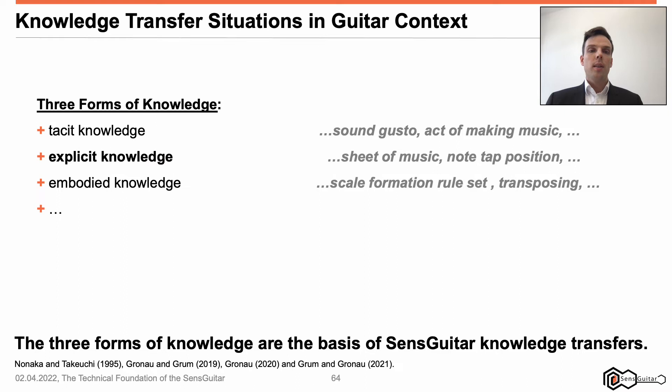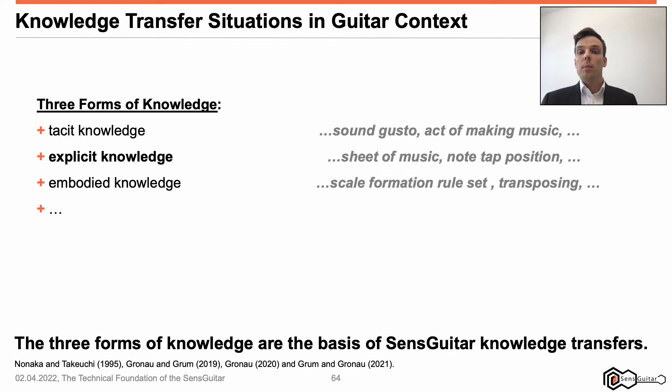Second, explicit knowledge. This form of knowledge is characterized by its easy handling, because it's unbound to an individual's head. For instance, knowledge of a musician about a song has been documented. Imagine a sheet of music which can be passed from musician to musician. By reading this sheet of music, any musician is able to at least tap the same notes on the guitar.